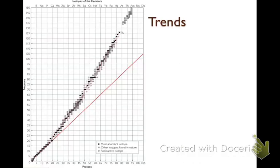So here are some basic trends. Here we have protons on the x-axis, neutrons on the y-axis. And the red line represents the same ratio or one-to-one ratio of protons to neutrons. So if you notice, below element 20,